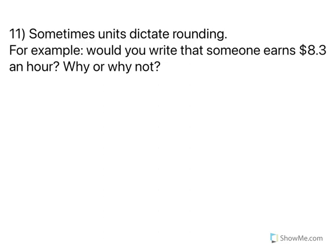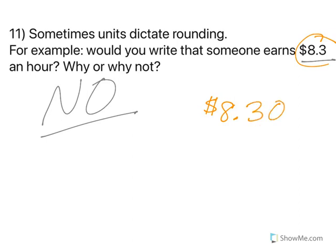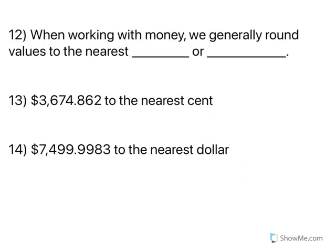Sometimes units dictate rounding. For example, would you write that someone earns $8.3 an hour? Why or why not? And that answer is generally no. Because when we're talking about money, we talk about dollars and cents. So we would say $8.30. Not $8.3. That $8.3 doesn't make sense. So if we're talking about money, we would generally round to the nearest hundredth. Because that's the nearest cent, right? Two decimal places.